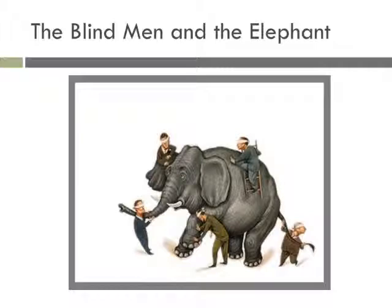There's a Hindu parable that illustrates it. A number of blind men came to an elephant. Somebody told them it was an elephant. The blind men asked, 'What is the elephant like?' and they began to touch its body. One said, 'It's like a pillar' — he had only touched its leg. Another said, 'The elephant is like a husking basket' — he had only touched the ears. Similarly, he who touched its trunk or belly talked of it differently. There are many things in life too vast, too microscopic, or too complicated for each of us to know directly. Each blind man had an incomplete and distorted perception, but by talking to each other, checking their ideas, and going back to the elephant, they could put together a representation much closer to the objective reality.